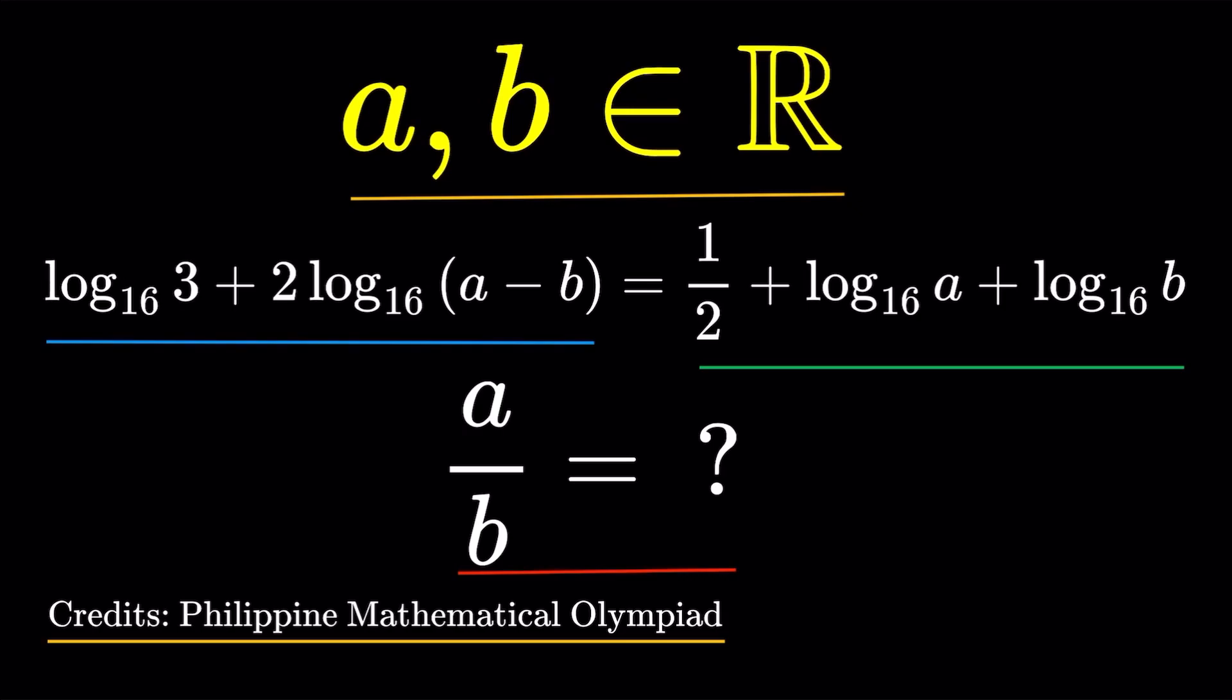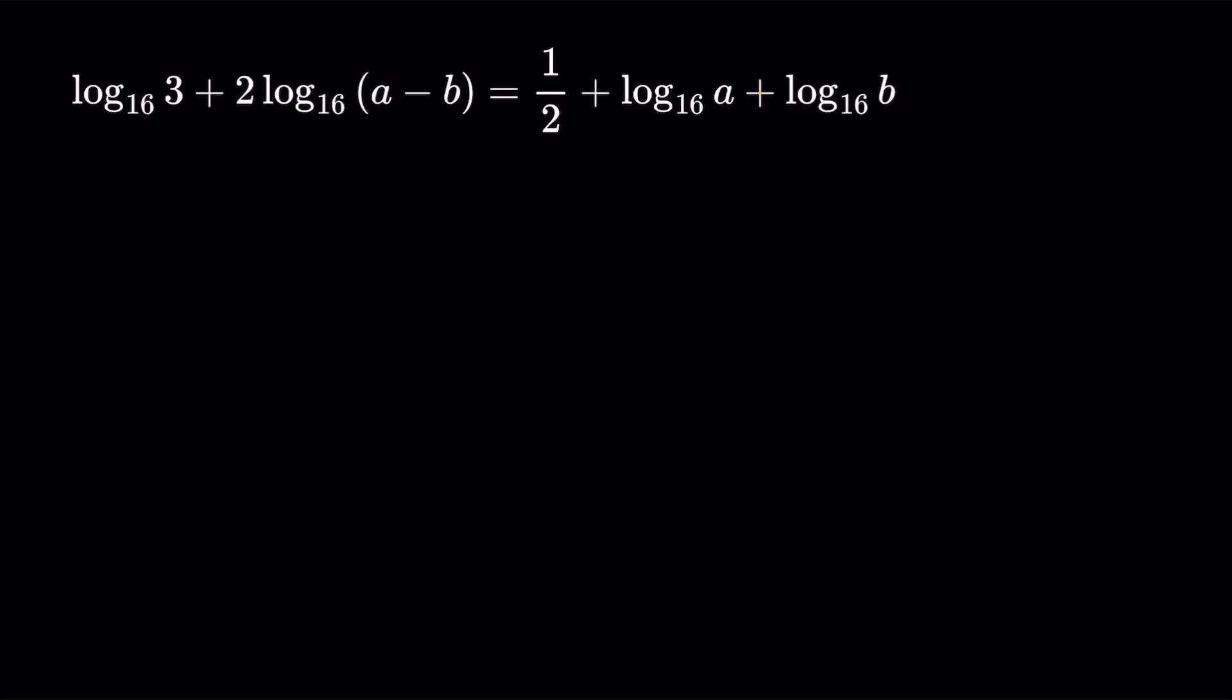Rather interesting because we are not really asked for a certain value of a or a certain value of b, but a over b. So what we might have to do in this item is probably there will be a relationship between a and b that we could be able to form from that. So we should be getting an equation in terms of a and b and hopefully we could get a over b from there.